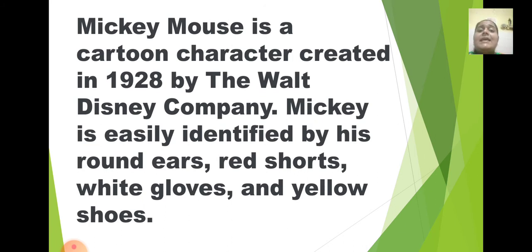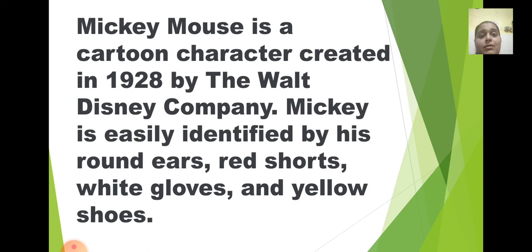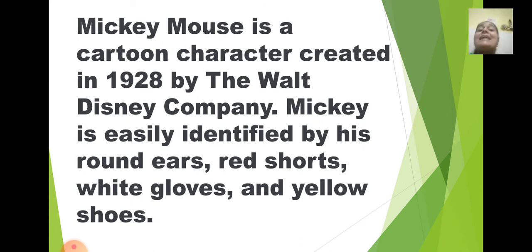Mickey is easily identified by his round ears, red shorts, white gloves and yellow shoes. So these are the physical characteristics of Mickey Mouse. It has round ears, it wears red shorts, it has white gloves in his hand always, and yellow color shoes. So this is the physical appearance of that particular character.